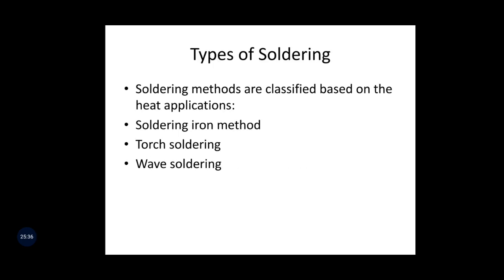Types of soldering methods: there are different ways to melt the filler rod. Three methods are: soldering iron method (using electricity), torch soldering (using gas flame), and wave soldering. These three methods are discussed as per the syllabus. All methods are aimed at providing heat to melt the filler rod and thereby join two small components.